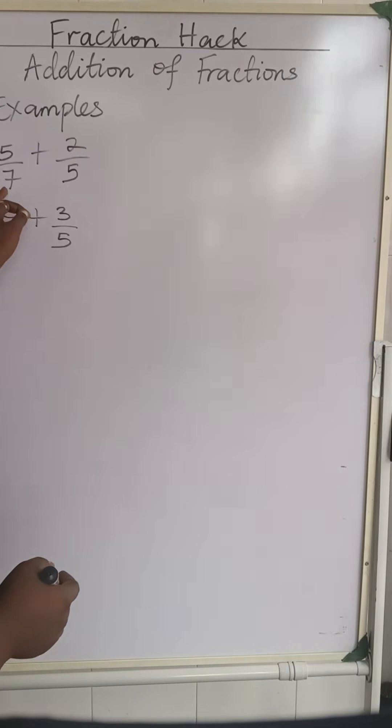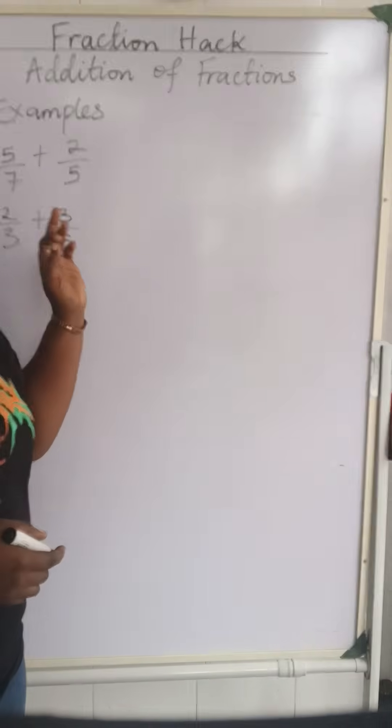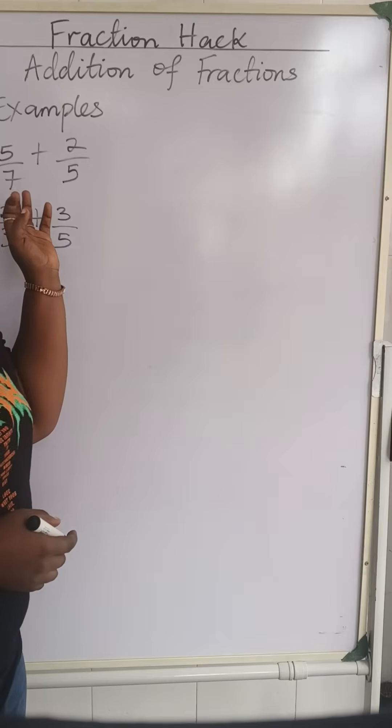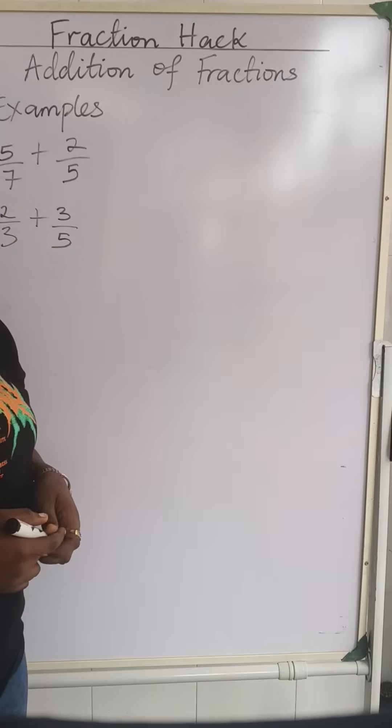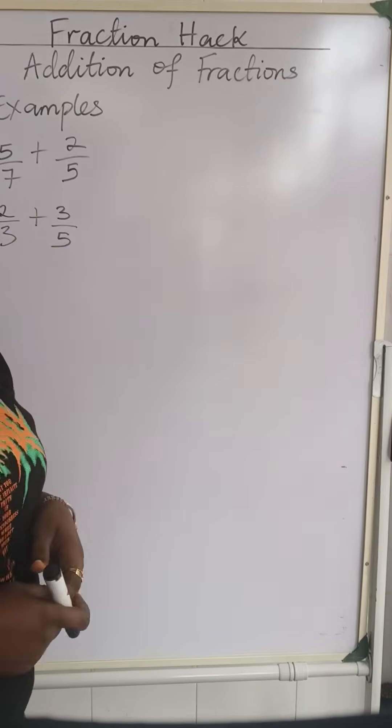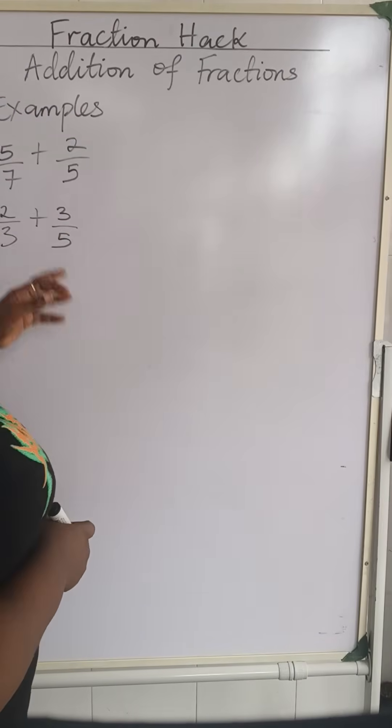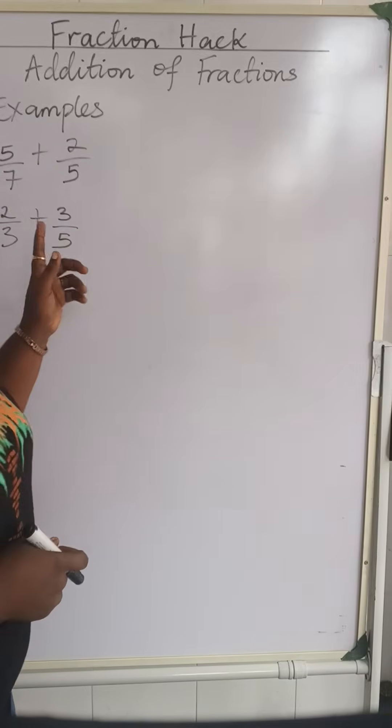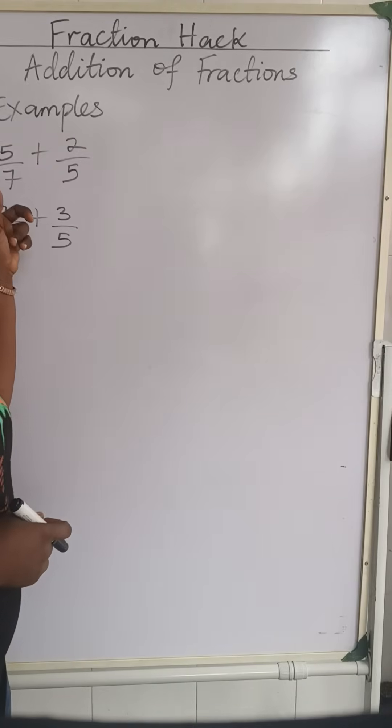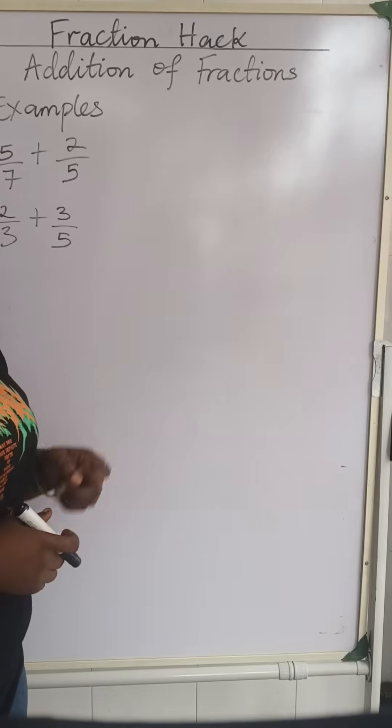Firstly, when you look at the denominators, you find out they are different. This is 7, this is 5. So we are going to look for the LCM because they have different denominators. Also, you can observe that 7 and 5 are prime numbers.